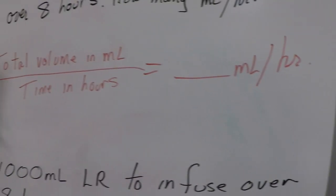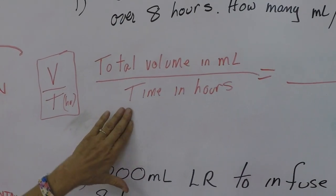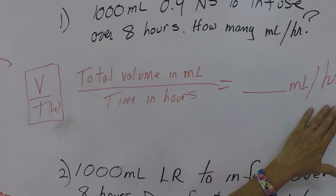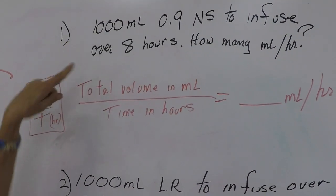So our total volume in ml divided by time in hours equals how many ml per hour that we're going to set our pump at. So let's fill our numbers in.